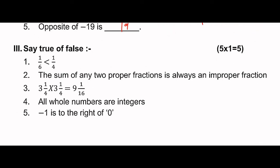Next, state true or false. For 1 by 6 and 1 by 4, when numerators are the same, the fraction with the smaller denominator is larger. That statement is true. Next: 1 by 2 plus 2, converting - 1 half improper fraction. 1 plus 1 by 2 gives 3 by 2, which is an improper fraction.